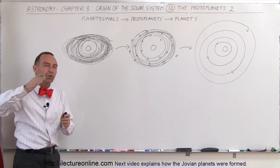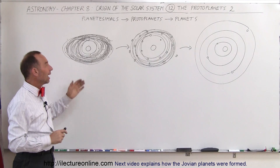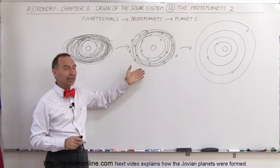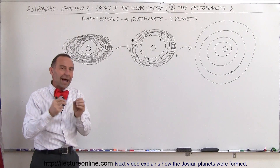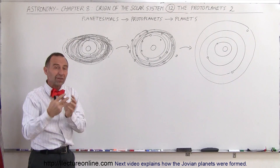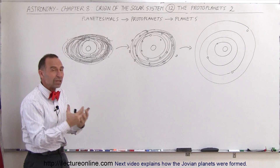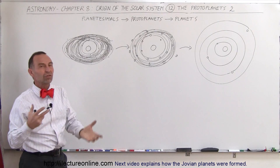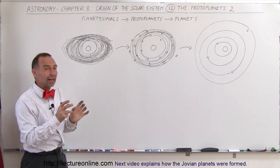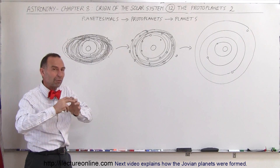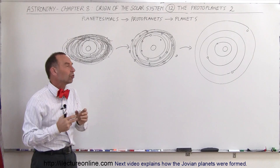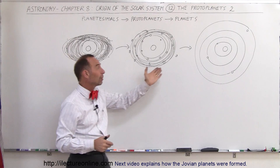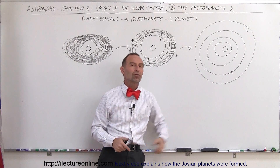We let the program run and fast-forwarded through time using the computer simulation. What eventually happened is that the 100 planetesimals would slowly, over time, collide and assimilate each other — they would accrete one another — and eventually end up with about 20 protoplanets. These would be much larger with a much larger gravitational influence on each other. If we continued running the program, we eventually ended up with four planets, just like our inner solar system.